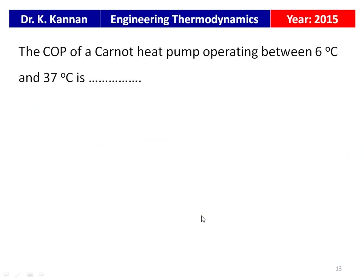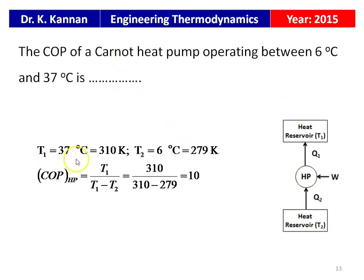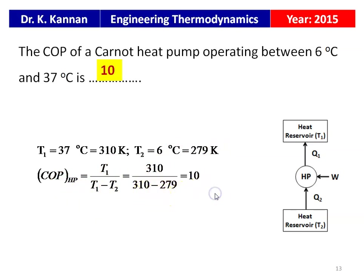Also from the 2015 question paper: the COP of a Carnot heat pump operating between 6°C and 37°C. Given: T1 = 37°C = 310 K, T2 = 6°C = 279 K. COP of heat pump = T1 / (T1 − T2) = 310 / (310 − 279) = 310 / 31 = 10. The answer is COP = 10.